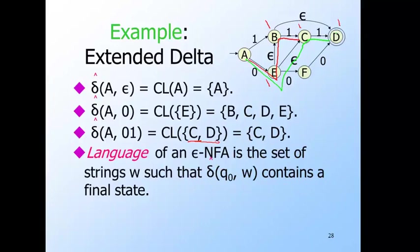The language of an epsilon NFA is defined in the expected way. For any string W, you compute the extended delta of the start state and that string W. If any of the resulting set of states is a final state, you accept W; if not, then not.